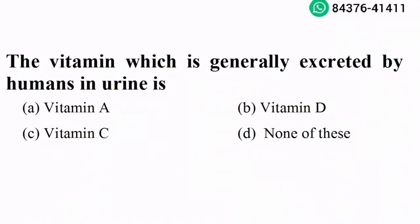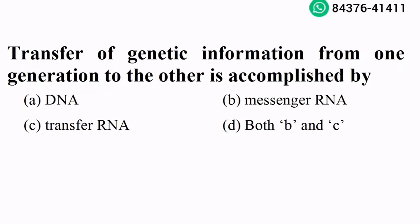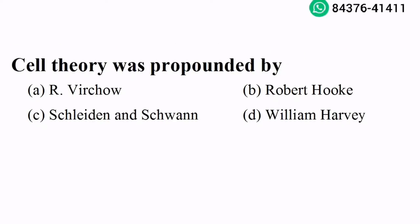The vitamin which is generally excreted by humans in urine is Vitamin C. Option C is the right answer. Transfer of genetic information from one generation to the other is accomplished by transfer RNA. Option C is the right answer. Cell theory was propounded by Schleiden and Schwann. Option C is the right answer.